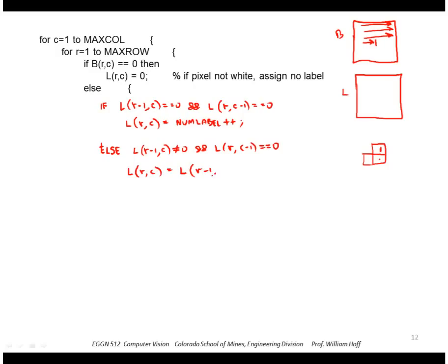Another case might be if the label to the left of me is not 0, it's been assigned. But the label above me is 0, in which case, again, I'm connected to the pixel to the left of me, so I should use his label.